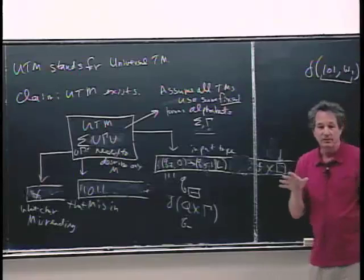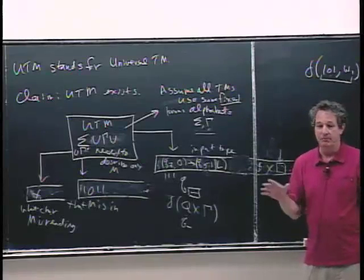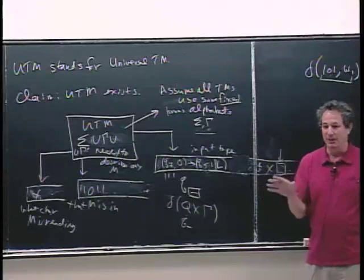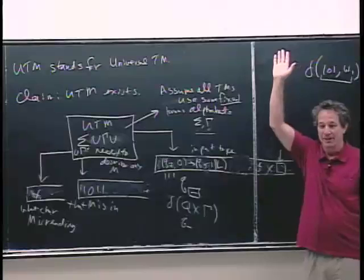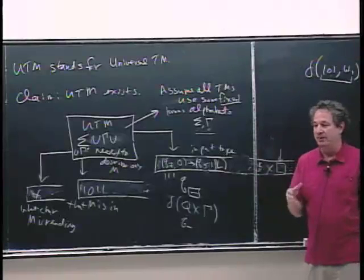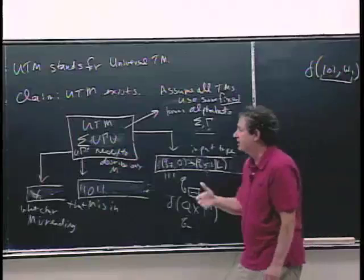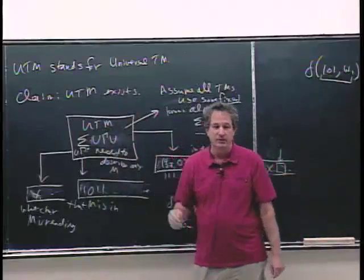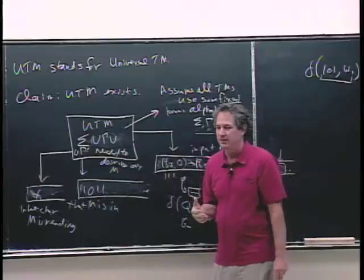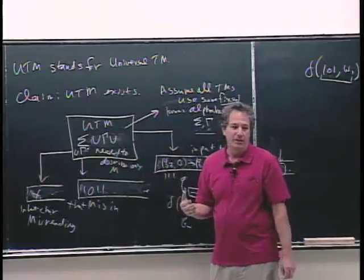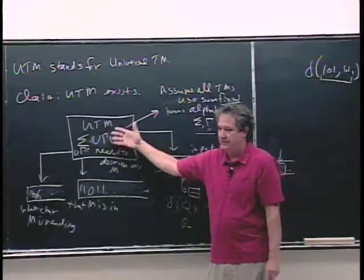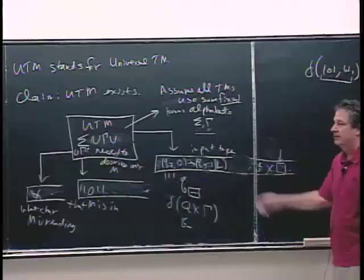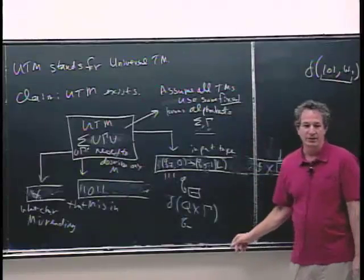Any questions on this? It's important, I think, to be completely convinced. When I read that in Sipser's book and it says we'll just have this universal Turing machine, I had to stop and say, well, how do we really know that this thing exists? You have to see some of the grunge to be convinced of it. This was the five minutes I was going to give at the beginning of this lecture on the grunge, and it takes longer.